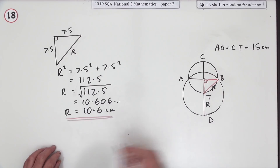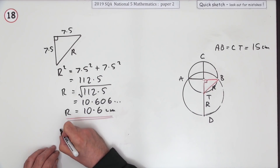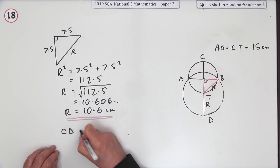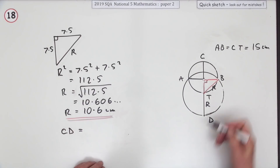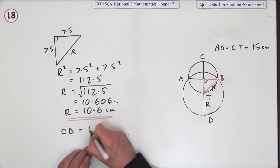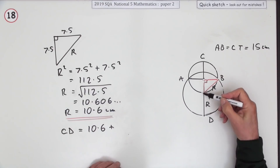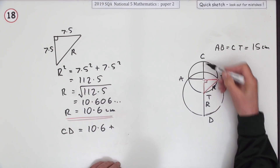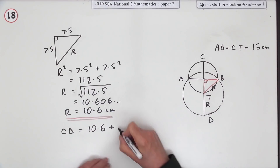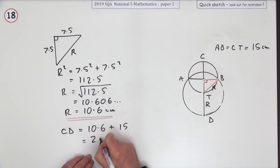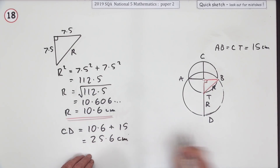So the overall height CD will be the radius of the large circle, 10.6, plus the diameter of the small circle, 15 — giving 25.6 centimetres.